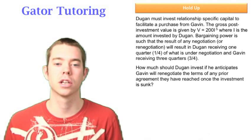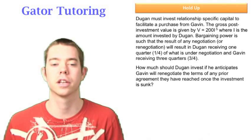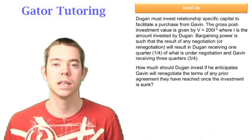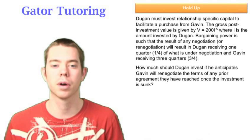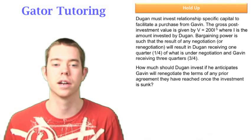It tells us that Dugan must invest relationship specific capital to facilitate a purchase from Gavin. So immediately I start thinking this is probably a holdup problem, and in fact the next sentence gives it away that it is.